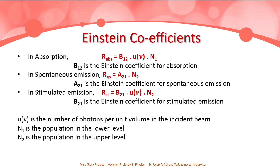Here u(ν) is the number of photons per unit volume in the incident beam, n1 is the population in the lower level, and n2 is the population in the upper level. From these relations it is clear that the rate of absorption and rate of stimulated emission have the same probability because both depend on u(ν). Depending upon the population n2, the probabilities of spontaneous and stimulated emissions will also be equal.